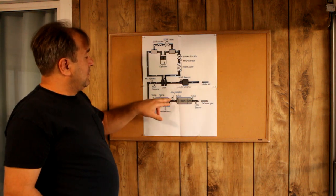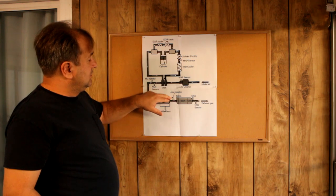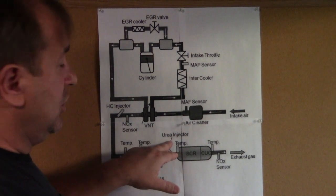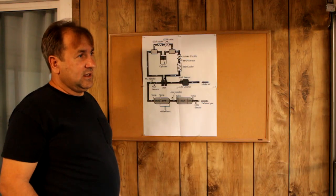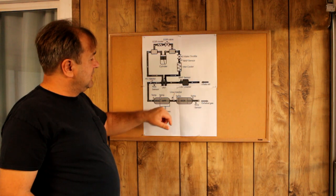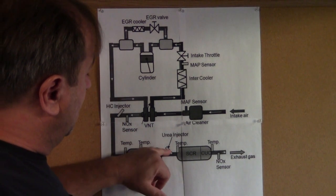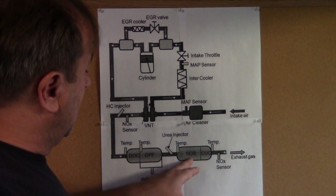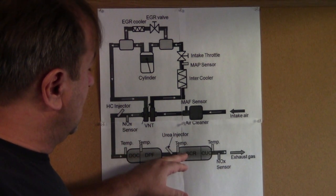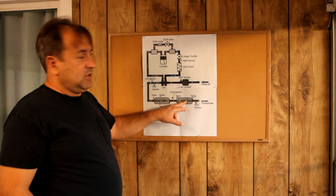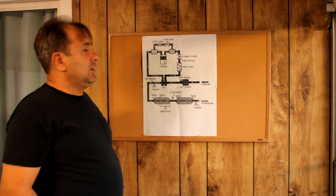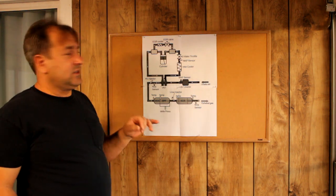How does this one work? We have an injector here that injects urea, like DEF fluid which we have at gas stations. This fluid is injected when we need regeneration. The urea mixes with NOx and breaks down into different molecules. Right now we have exhaust with more cleaner particles, more fine particles going out.